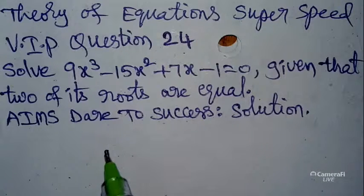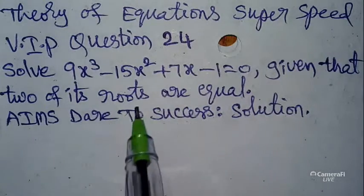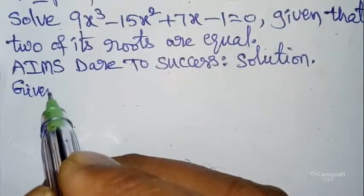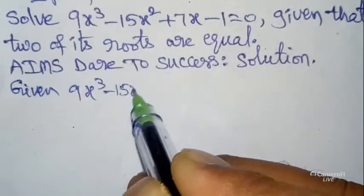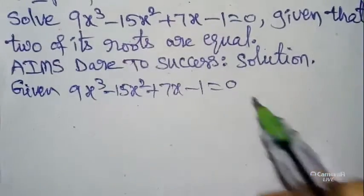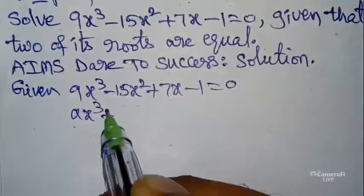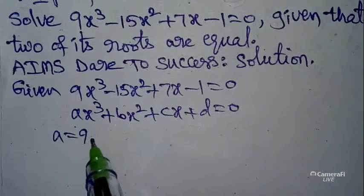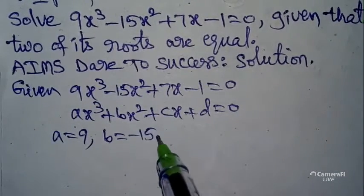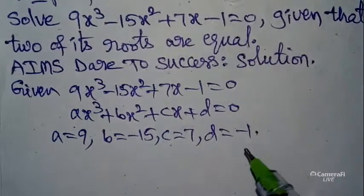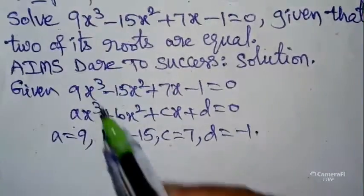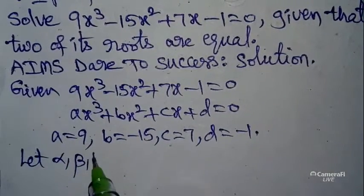I am here — why do you fear? Please don't worry. Now I want to start the solution. The given equation has two roots that are equal. The given equation is 9x³ - 15x² + 7x - 1 = 0. This is in the form ax³ + bx² + cx + d = 0, where a = 9, b = -15, c = 7, d = -1.